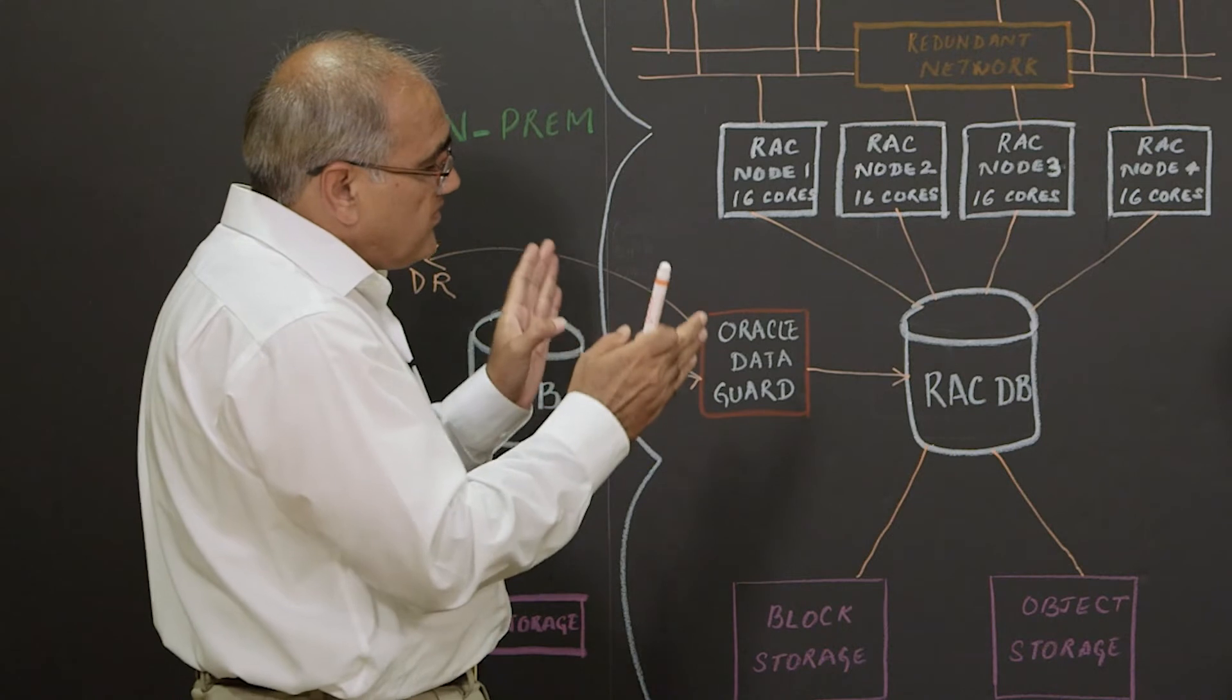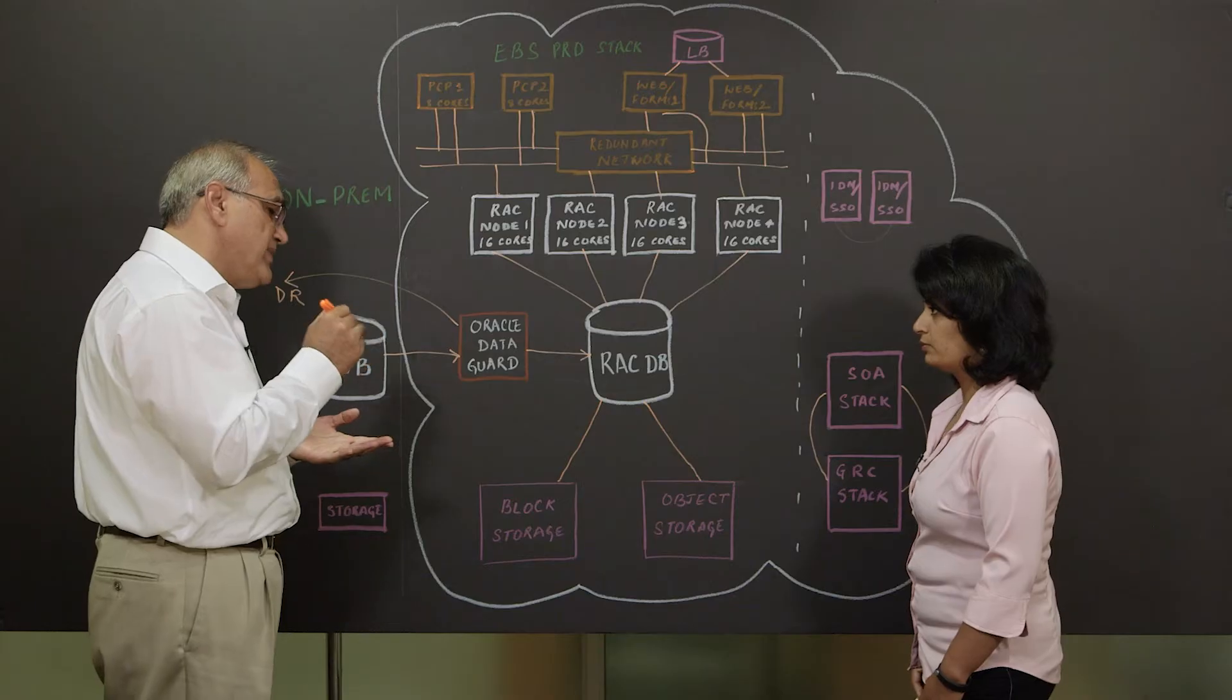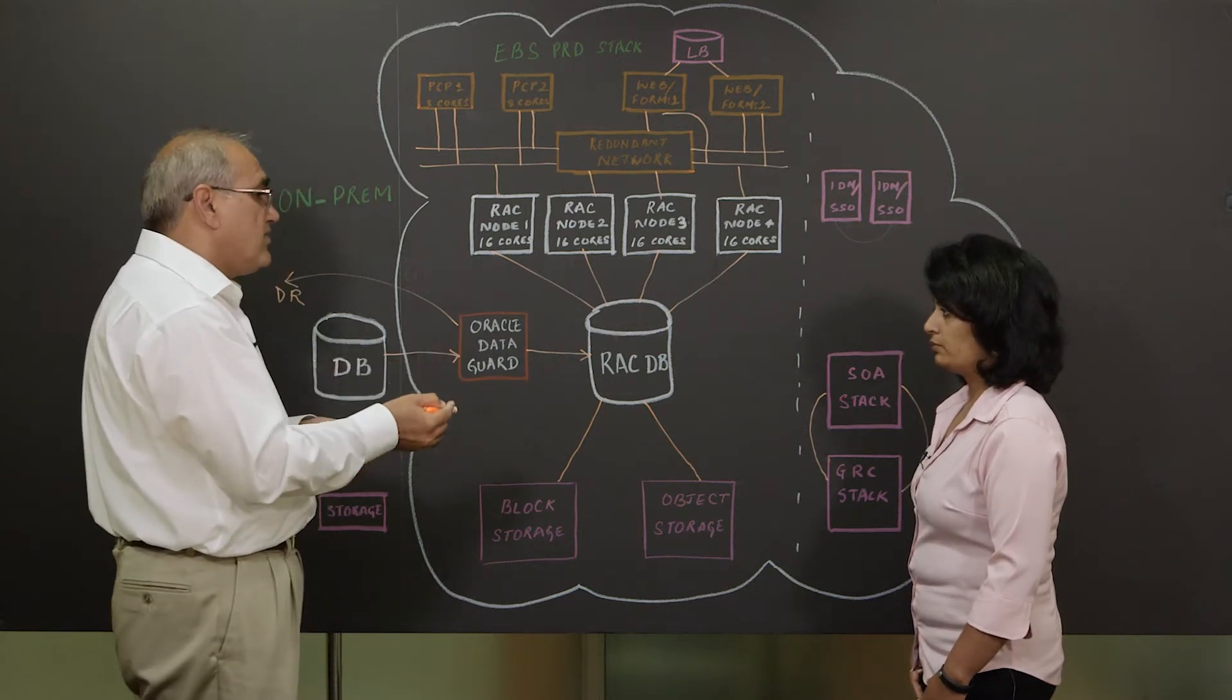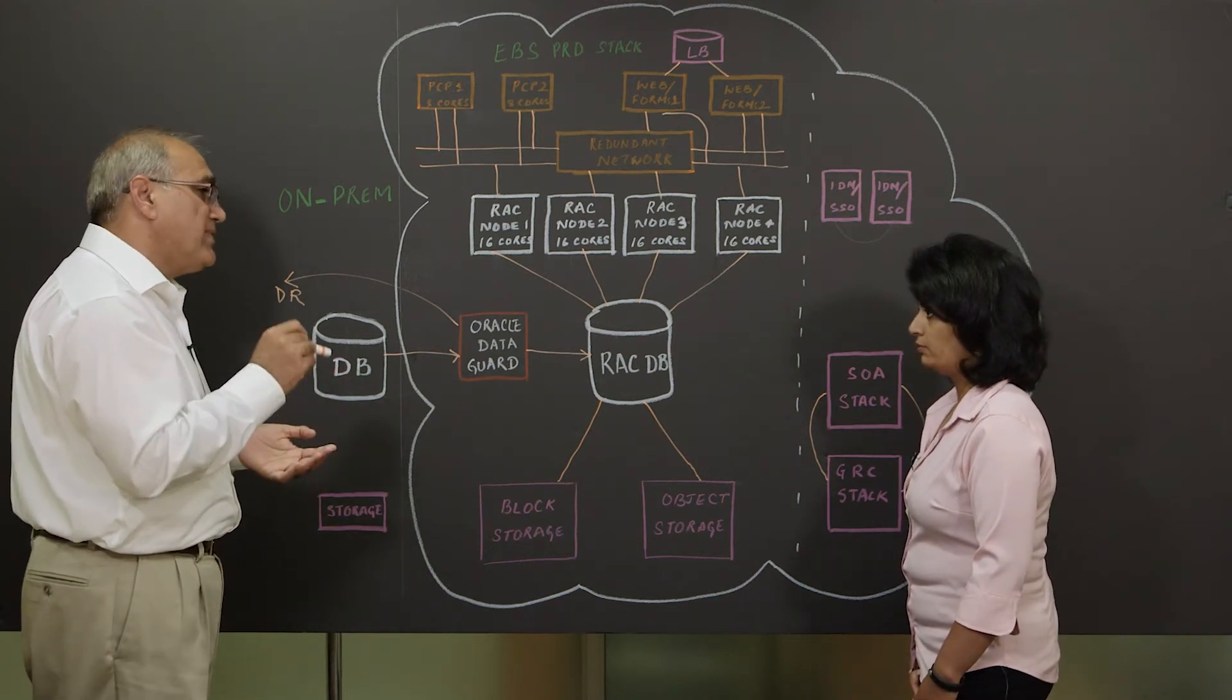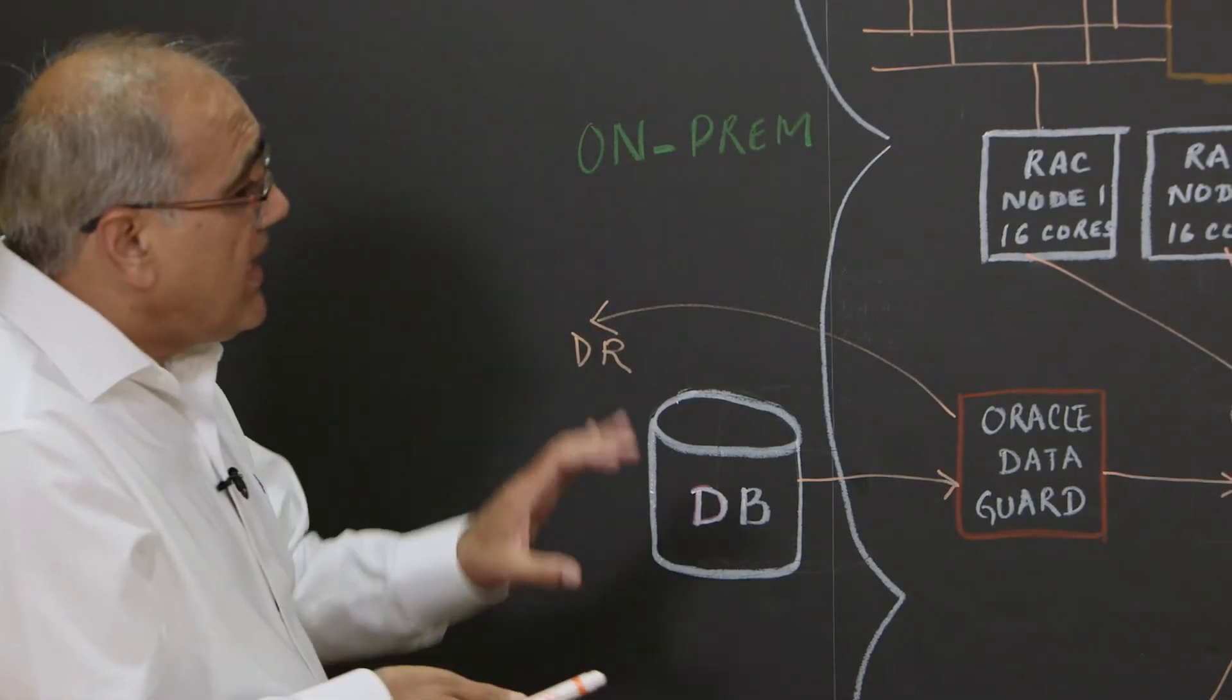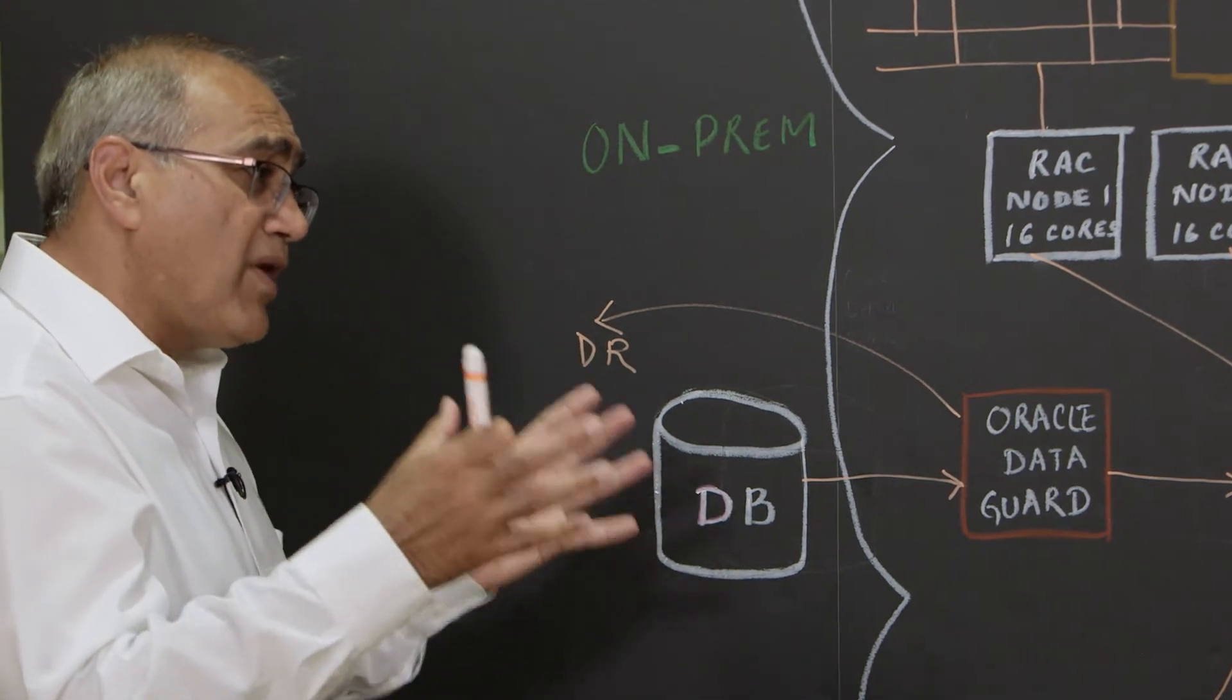Once we went live, we had two stacks in the cloud, which was EBS-PRD and EBS-QA. And we had three more supporting instances, EBS-Patch, EBS-DEV, and EBS-TEST that were on-prem. So since all these three supporting instances have the same amount of data, we had a challenge of moving backwards 10 to 12 terabytes of data every time.